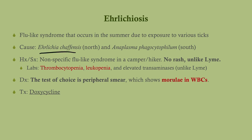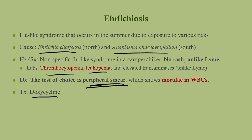Ehrlichiosis is caused by Ehrlichia chaffeensis, more in the northern U.S., or Anaplasma phagocytophilum, more in the south. Labs show thrombocytopenia and leukopenia — in contrast to babesiosis and Lyme disease, where platelets and white count are more or less normal. Elevated transaminases can also be seen. The test of choice is a peripheral smear, where you'll see morulae inside the white blood cells. Treatment is doxycycline.